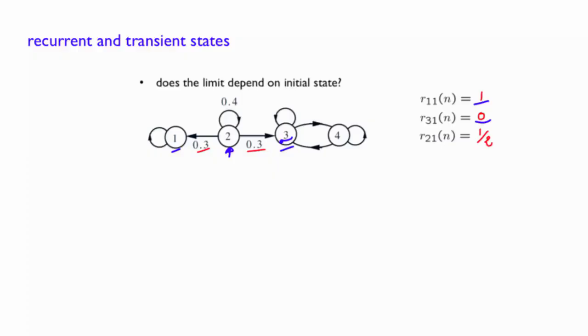We have said that this was due to the fact that some states are not accessible from some other states. Our goal here is to make such a statement more precise and formal. In order to do so, we will classify the states of a Markov chain in a transition diagram into two types: recurrent and transient.